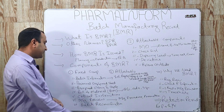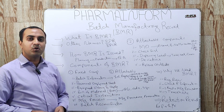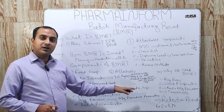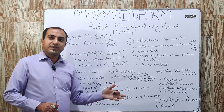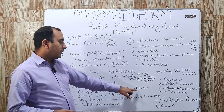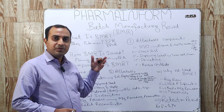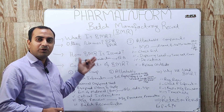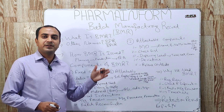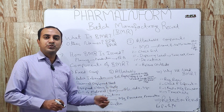The next fixed component is the bill of material, also known as BOM. BOM is an important component of the batch manufacturing record because it contains all the quantities of the excipients and APIs that are going to be used in the manufacturing process. It also includes code numbers for these materials and has a column for signing authority by the production department after verification of the quantities and codes of all the materials.